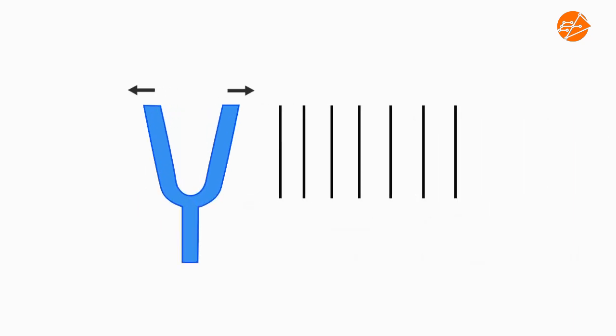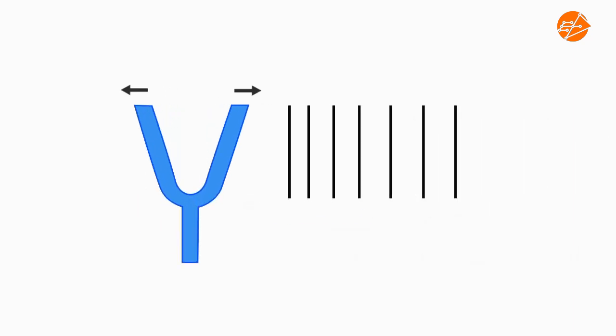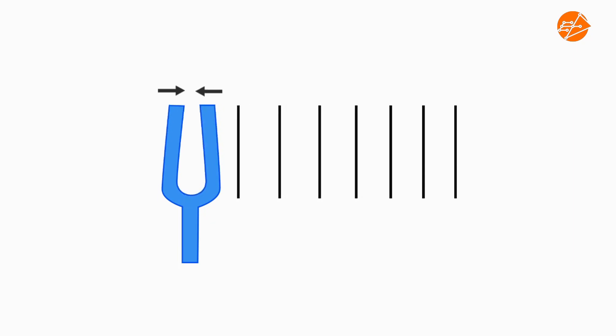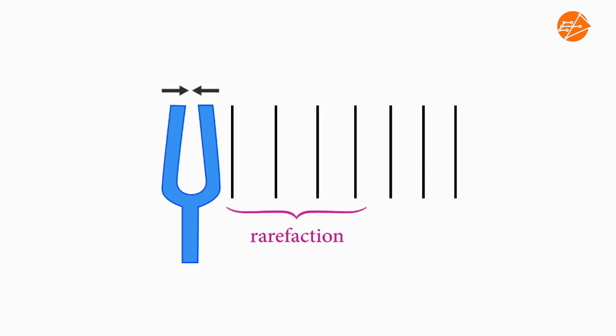When the prongs move outwards, the layers of air close to the prongs are pushed close together, creating a region of compression. When the prongs move inwards, the air layers are pulled apart, creating a region of rarefactions.